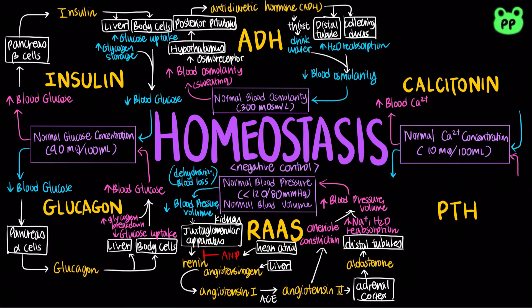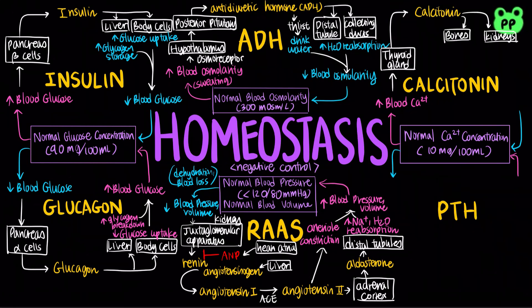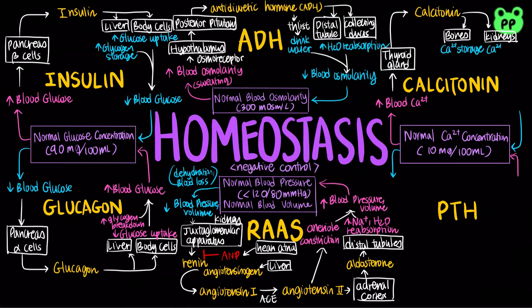The normal blood calcium concentration is 10 mg per 100 ml. When blood calcium level rises, the thyroid gland secretes calcitonin, which triggers calcium storage in the bones and calcium excretion in the kidneys, thus lowering the blood calcium level. In fishes, rodents, and some other animals, calcitonin is required for calcium homeostasis. However, in humans, calcitonin is apparently needed only during extensive bone growth during childhood.